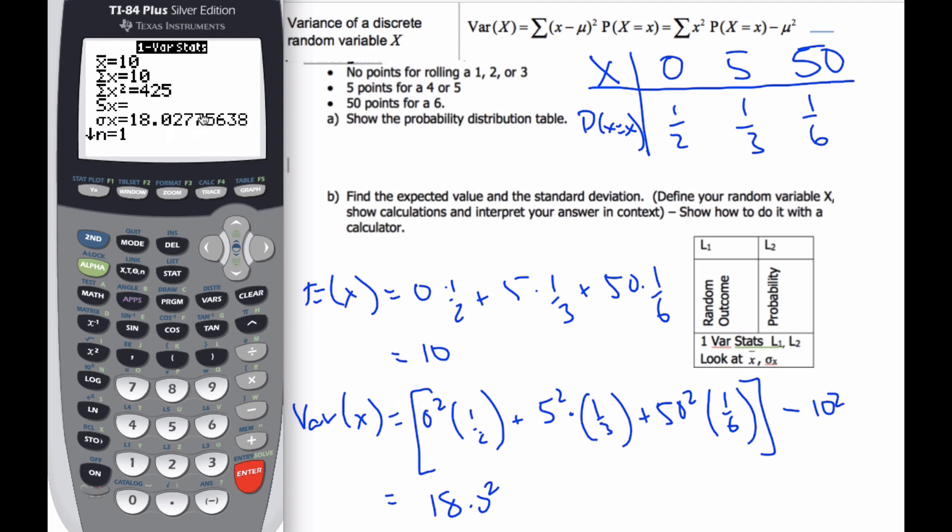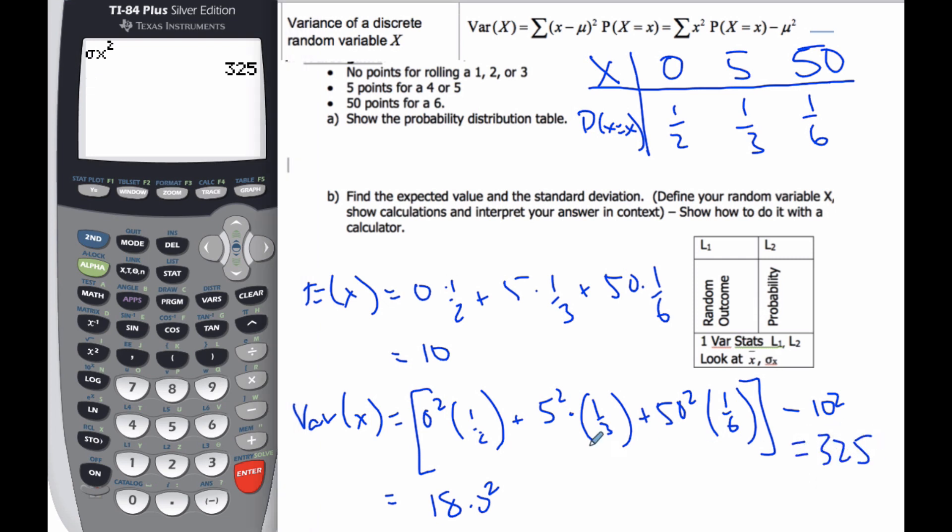If I want to actually find my variance, what I can do, here's a neat little calculator trick. If I go to my variables, go to my statistic variables. Here's my standard deviation and I square it. This will be my variance. So my variance actually equals 325. And so this is my standard deviation here, is my standard deviation is 18.0.